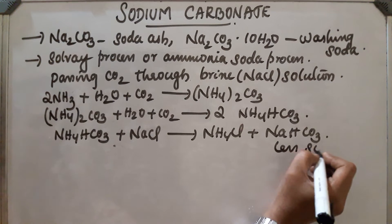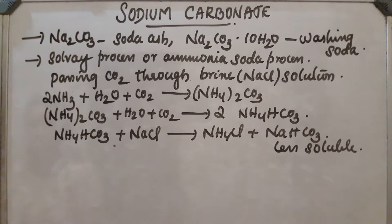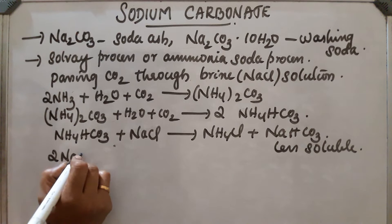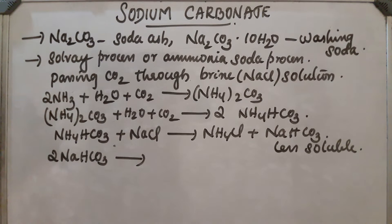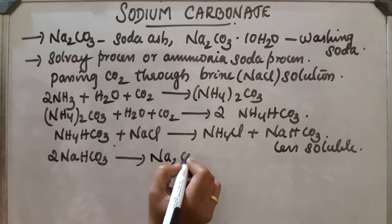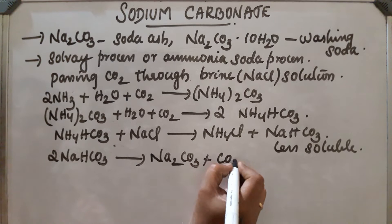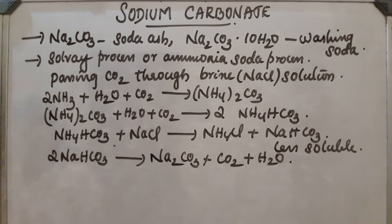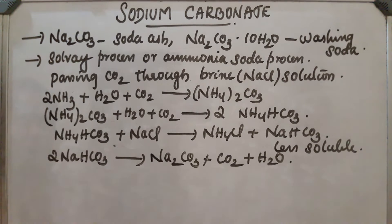Sodium bicarbonate obtained is less soluble, so it gets precipitated and filtered. On heating, sodium bicarbonate is converted into sodium carbonate (Na2CO3), along with carbon dioxide and water. The filtrate after removal of sodium bicarbonate contains ammonium chloride.